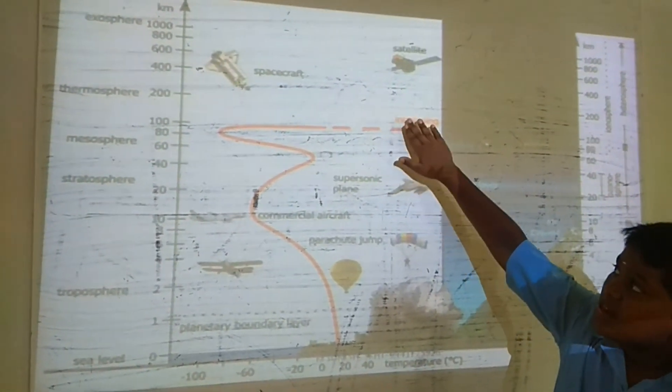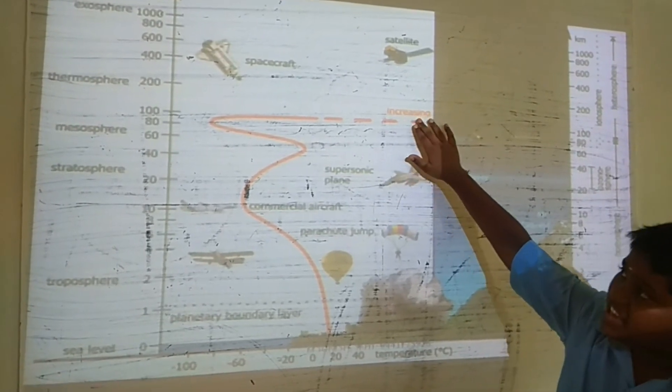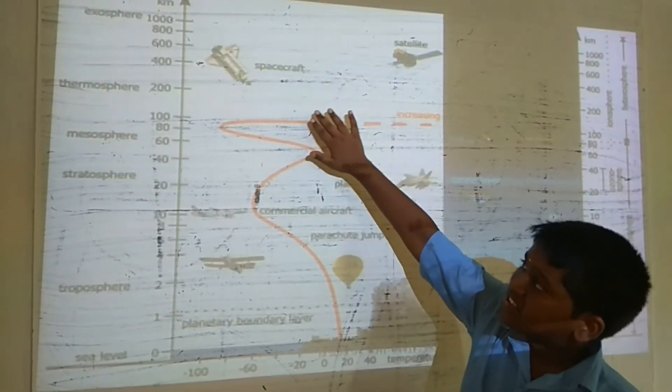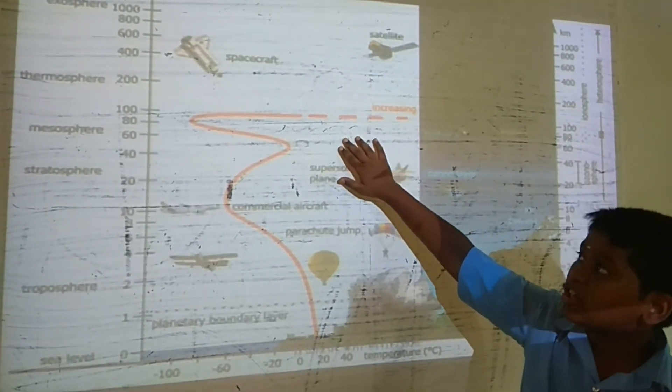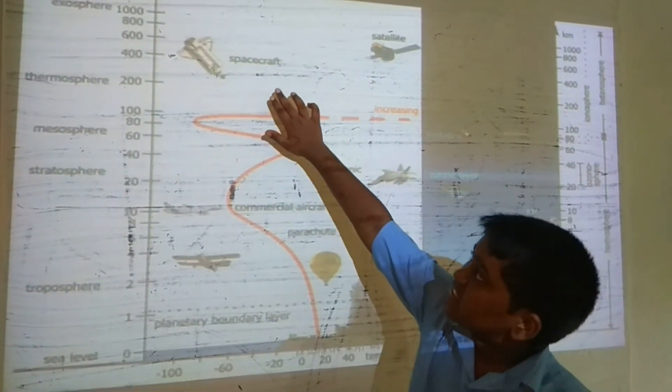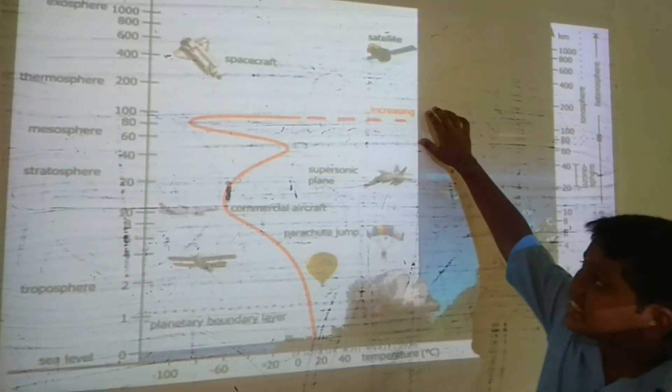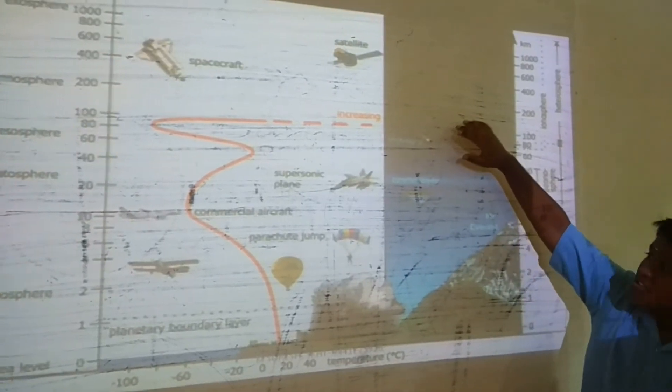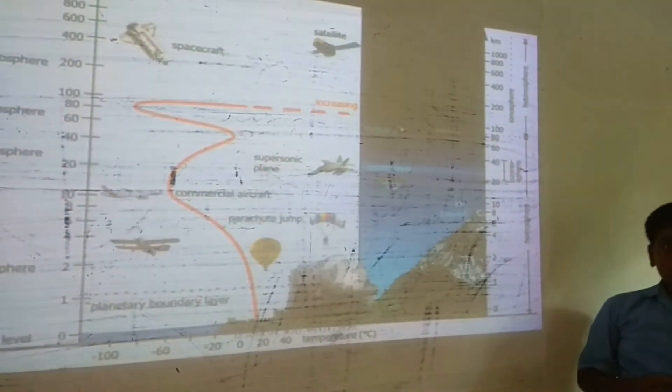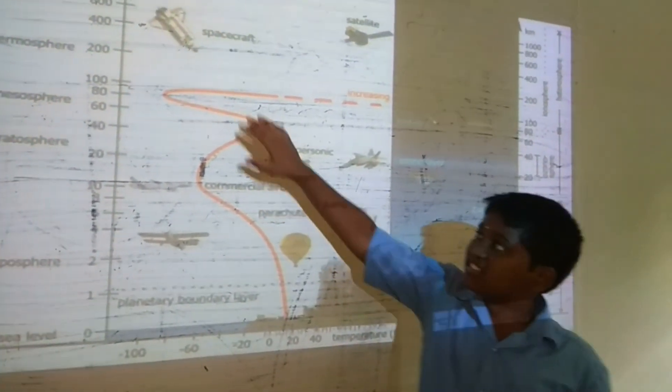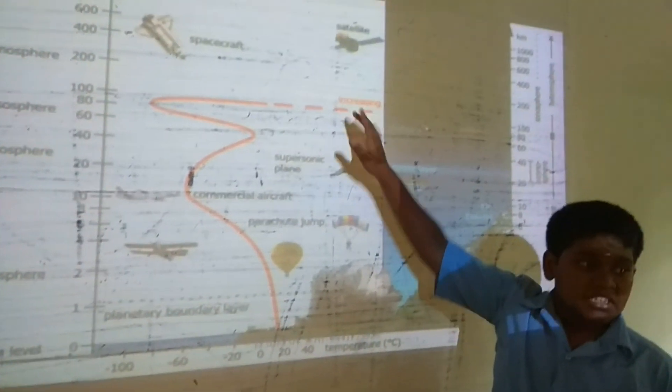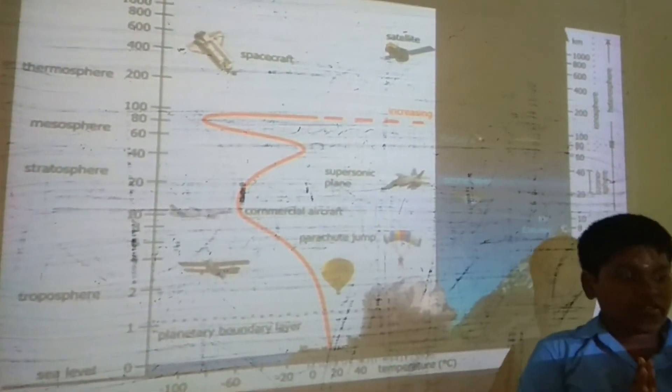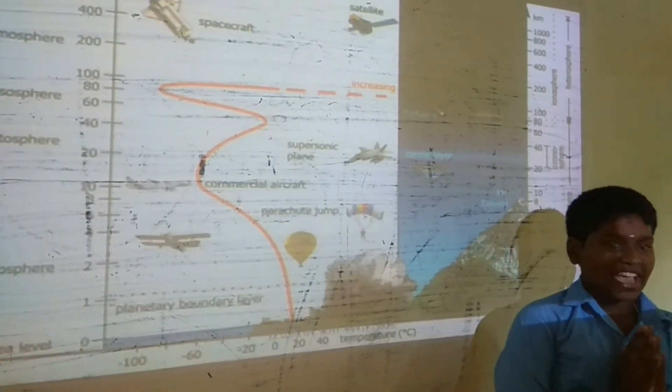The final layer is the Exosphere, up to 1280 kilometers. Spacecraft and satellites travel in it. The temperature continuously increases in the Exosphere. That's it about the structure of the atmosphere. Thank you.